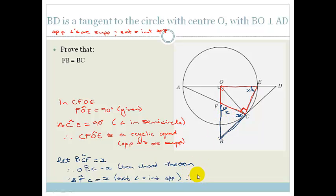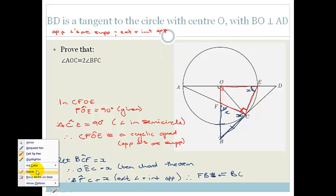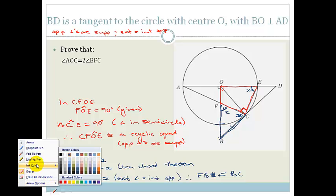So therefore that's X. And therefore we have that FB is equal to BC. There we go. So that's equal to that. Let's see what else they want us to prove. Now they want us to prove that angle AOC, let's change colour.